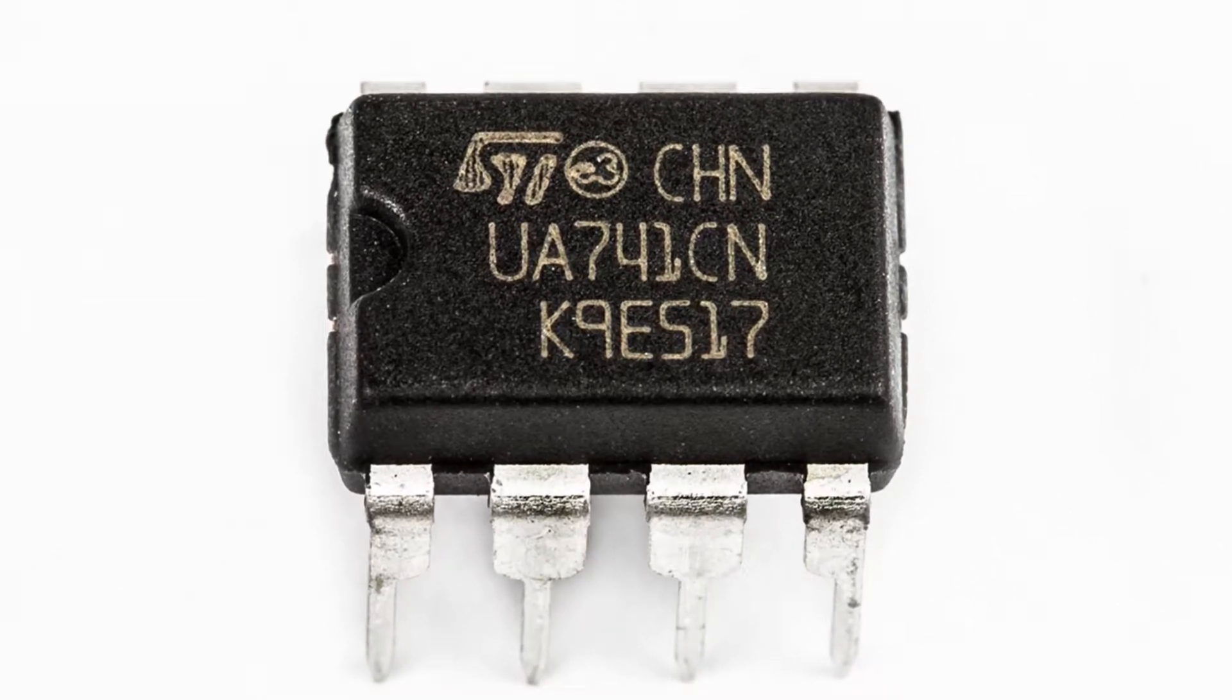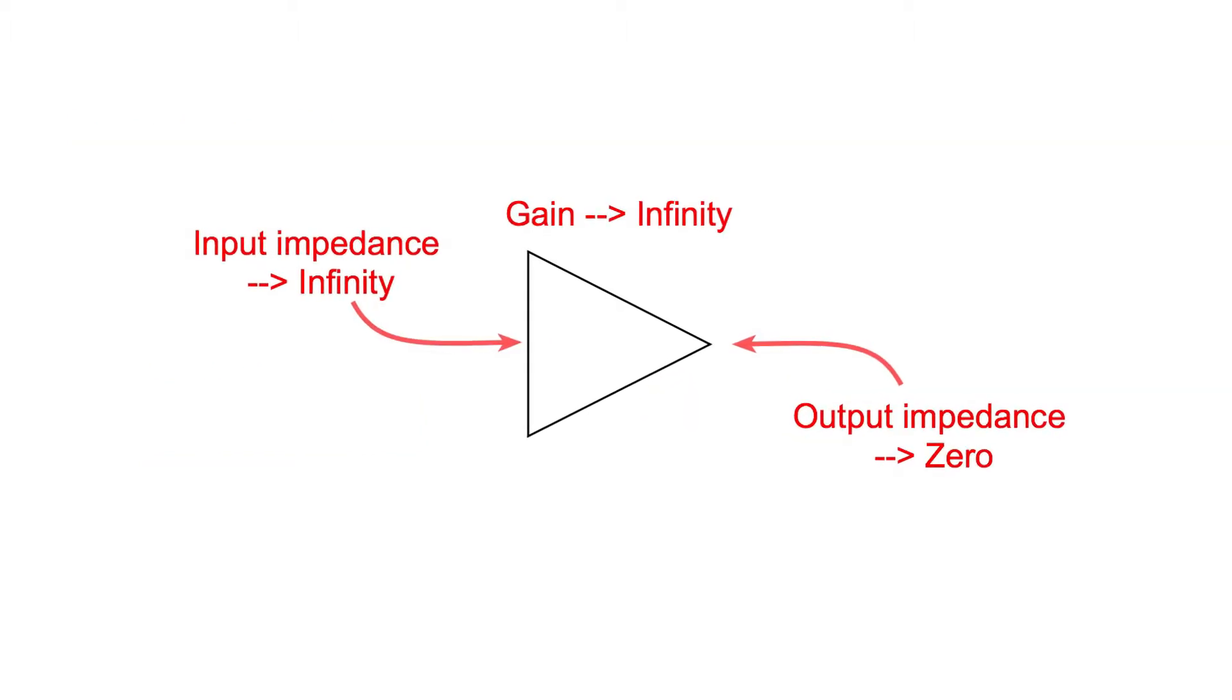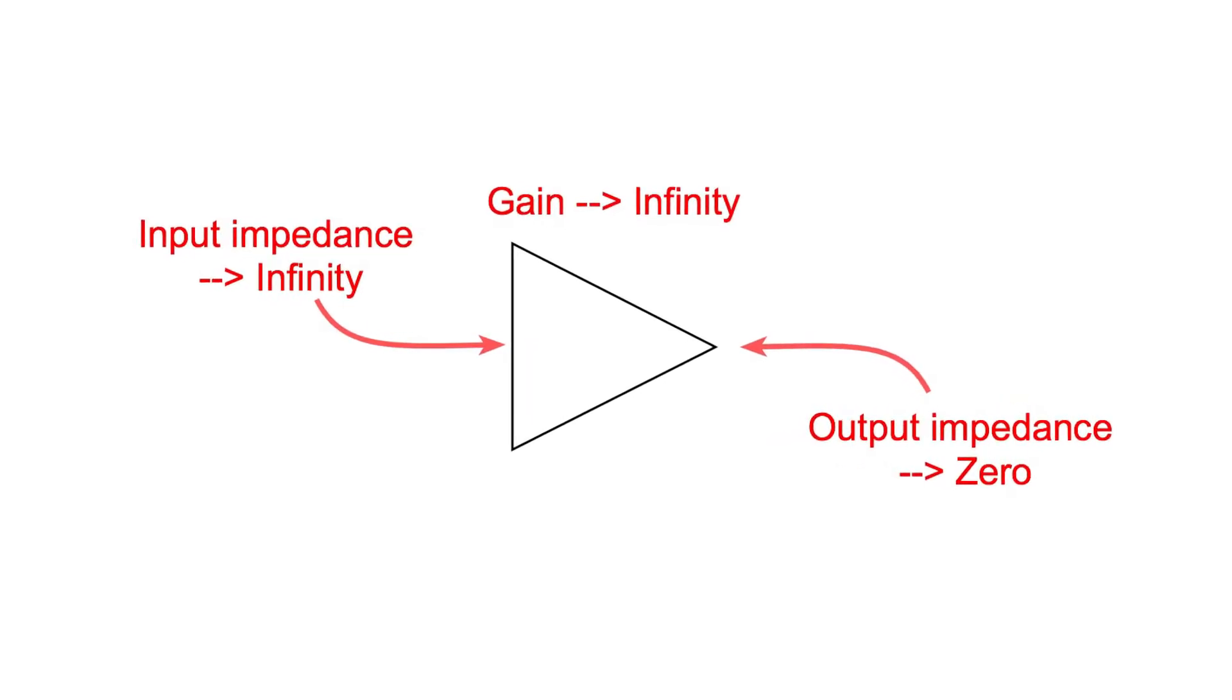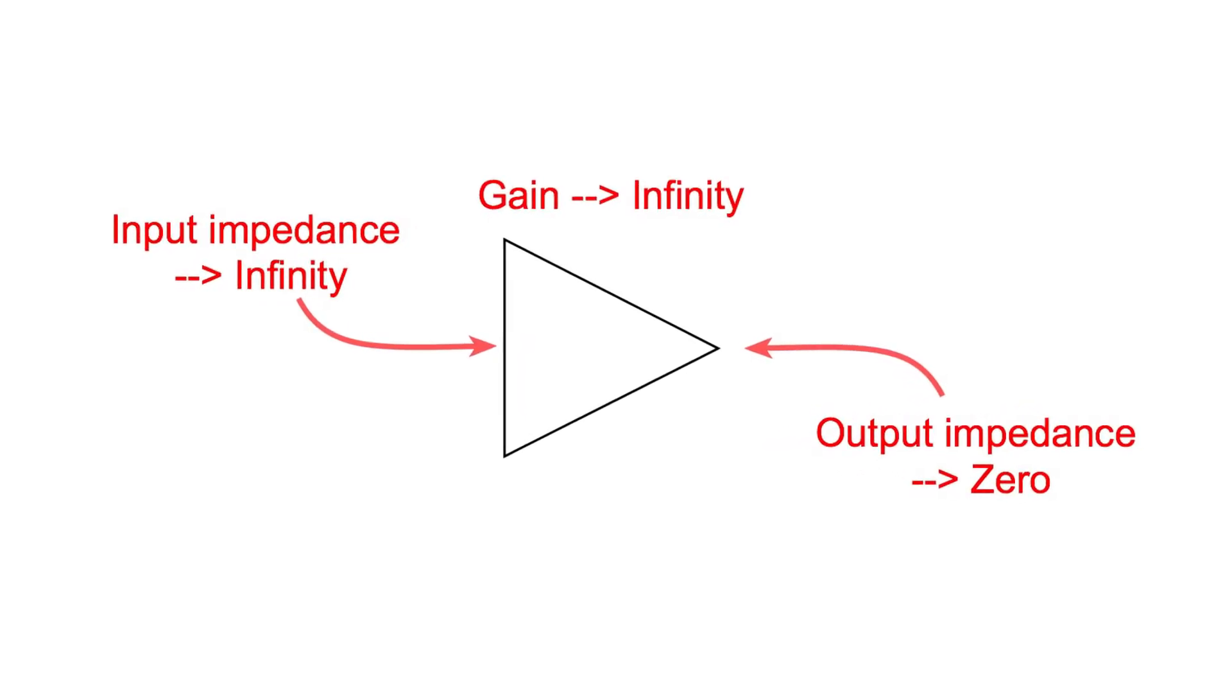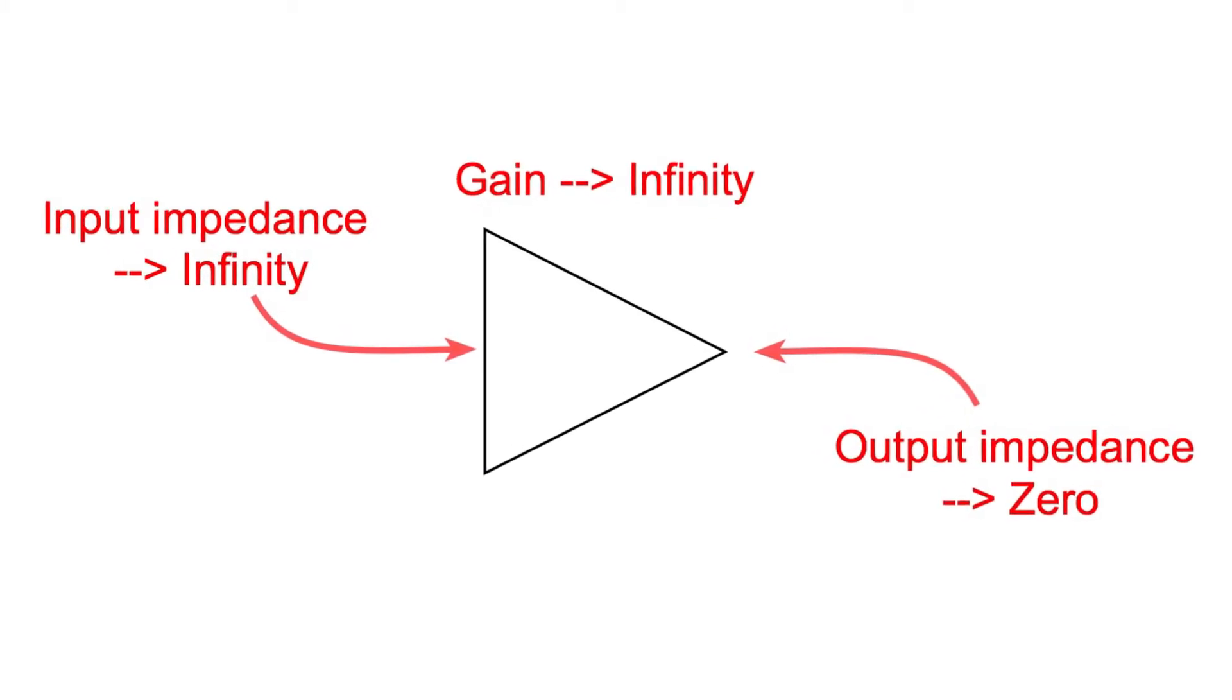The Op-Amp, or to give it its full name, the Operational Amplifier, is a very convenient analogue circuit block to use. It has a very high level of gain, it has a high input impedance and a low output impedance. As a result, Op-Amps can be used in a wide variety of analogue circuits, the different functions being defined by the feedback that's used.